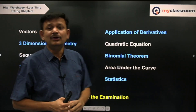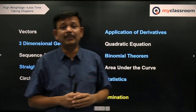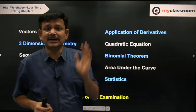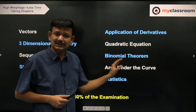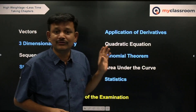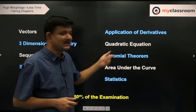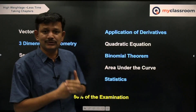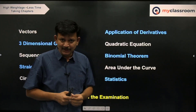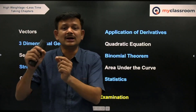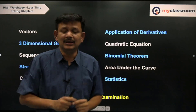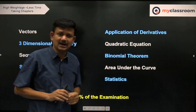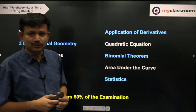Binomial Theorem doesn't have many questions on binomial coefficients — your NCERT textbook will suffice for binomial coefficients and terms. Only spend some time on multinomial expansion. In the last few years, questions are being asked on finding the coefficient of, say, a⁹b⁸c¹⁰ in (a+b+c)²⁹ — focus on those types of questions.